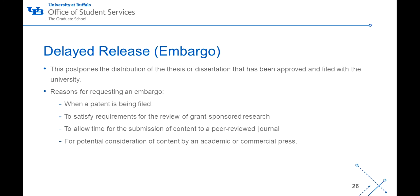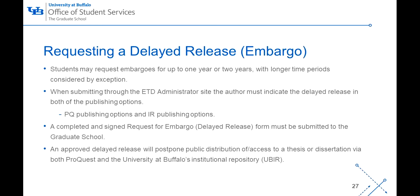An embargo is a delayed release that postpones the distribution of a thesis or dissertation that has been approved and filed with the university. There are several reasons one may request an embargo, such as a patent being filed, to satisfy requirements for the review of grant-sponsored research, to allow time for the submission of content to a peer-reviewed journal, or to allow for potential consideration of content by an academic or commercial press. Students may request an embargo for up to one or two years, with longer time periods considered by exception. When submitting your document, the author must indicate the delayed release in both the PQ and IR publishing options, and a completed and signed request for embargo form must be submitted to the graduate school. An approved delayed release will postpone public distribution of and access to a thesis or dissertation via both ProQuest and the UBIR.